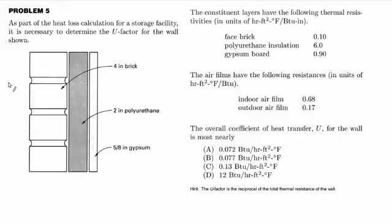And the air films have the following resistances in slightly different units, hour-foot-square degrees Fahrenheit over BTU. We have the indoor air film and the outdoor air film. The overall coefficient of heat transfer U for the wall is most nearly what? And they've given us a very helpful hint: the U-factor is the reciprocal of the total thermal resistance of the wall.